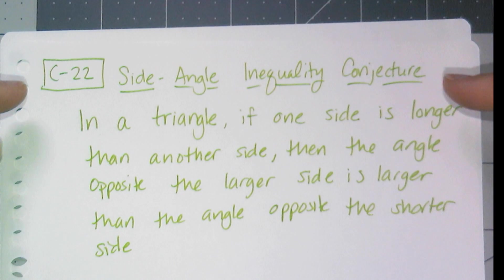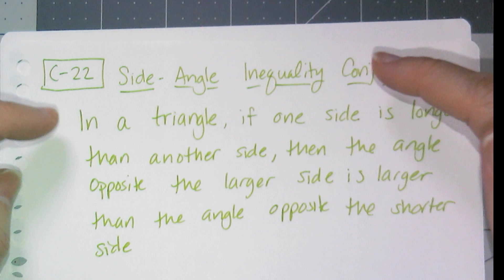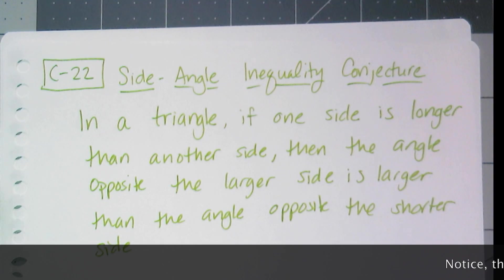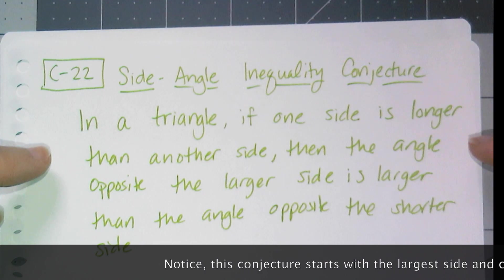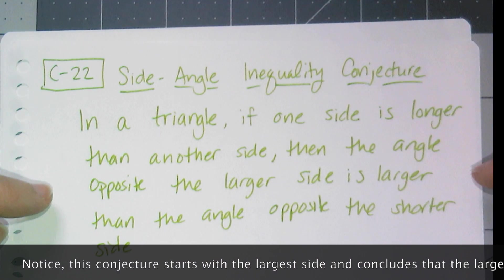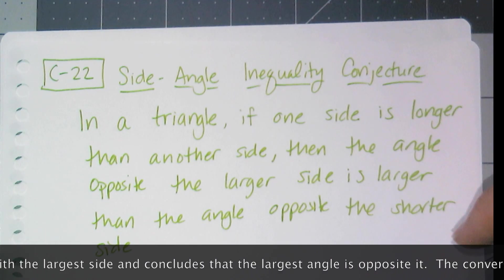So we're going to make this conjecture 22, the side angle inequality conjecture. It says in a triangle if one side is longer than another side, then the angle opposite the larger side is larger than the angle opposite the shorter side.